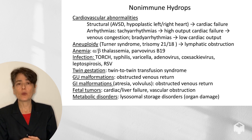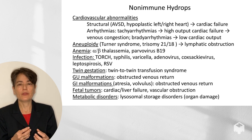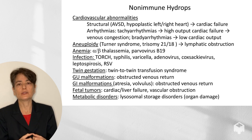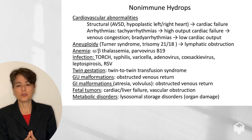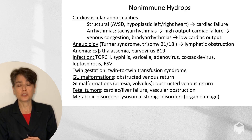Twin-to-twin transfusion syndrome can also cause non-immune hydrops. Genitourinary malformations, gastrointestinal malformations, and some tumors all have the mechanism of obstructed venous return — remember that fetal vasculature is not as robust as in an infant or adult, so pressure can cause obstruction. Fetal tumors can also cause cardiac and liver failure. Finally, a number of metabolic disorders, such as lysosomal storage disorders, can result in organ damage to the liver and heart.